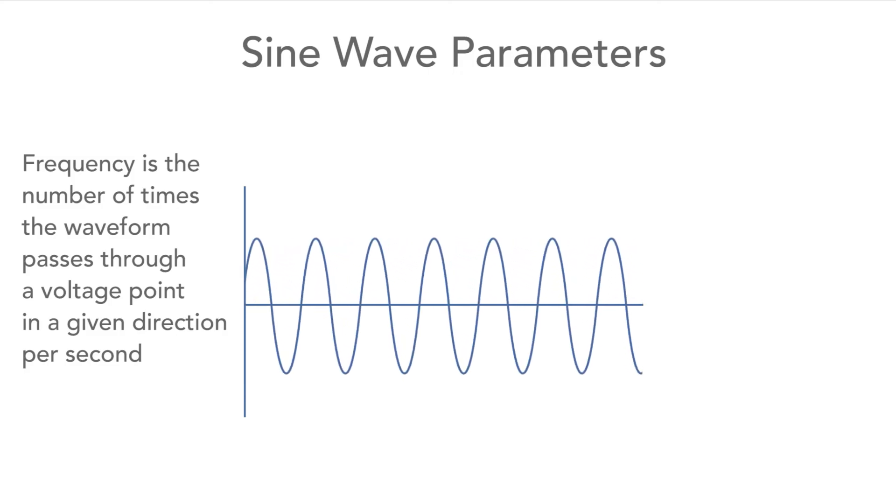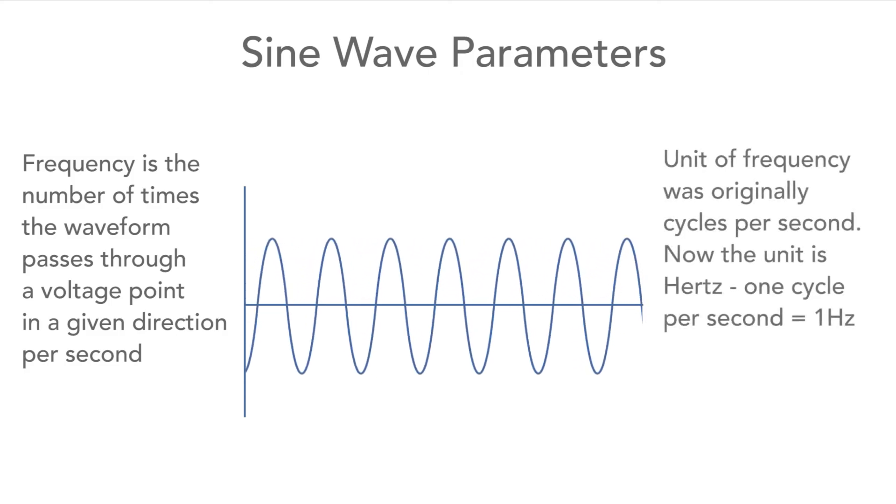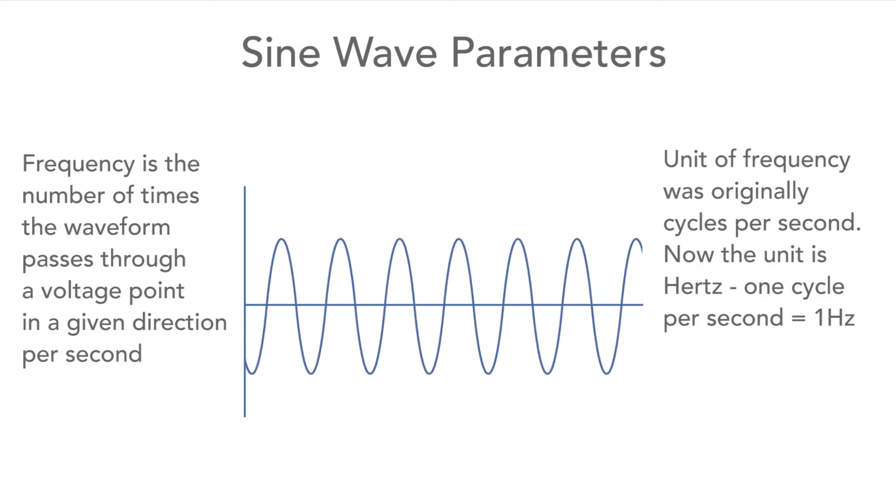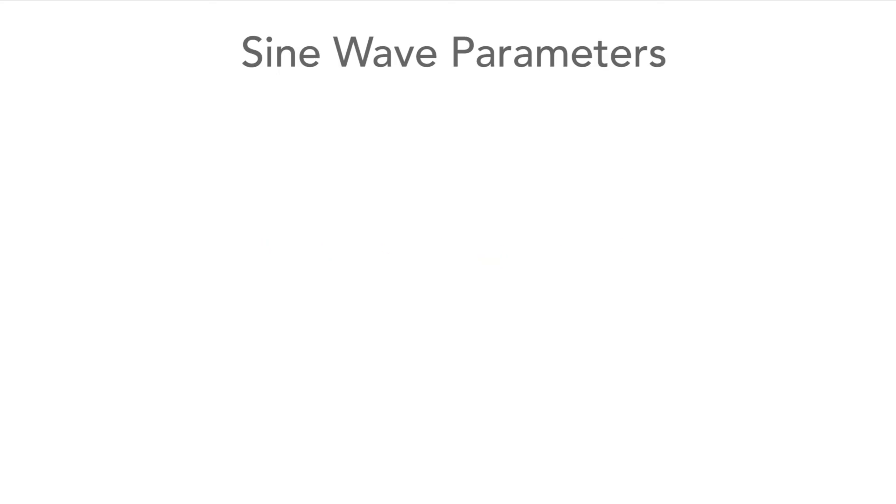The frequency can be measured as the number of cycles per second, but these days the unit that's used for frequency is the hertz. One hertz is equal to one cycle per second.